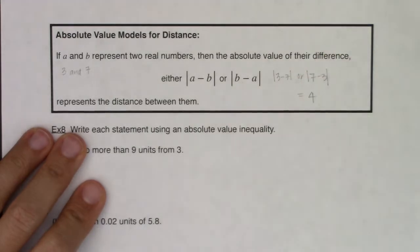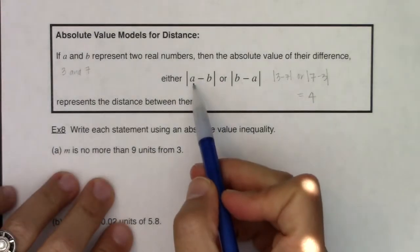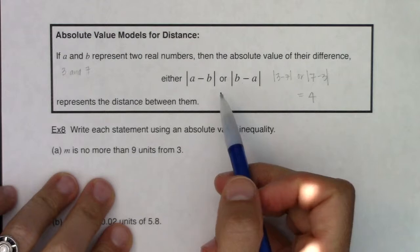These two numbers are four units apart. So if I want to talk about the distance between two numbers, I'm going to subtract them and then take the absolute value.